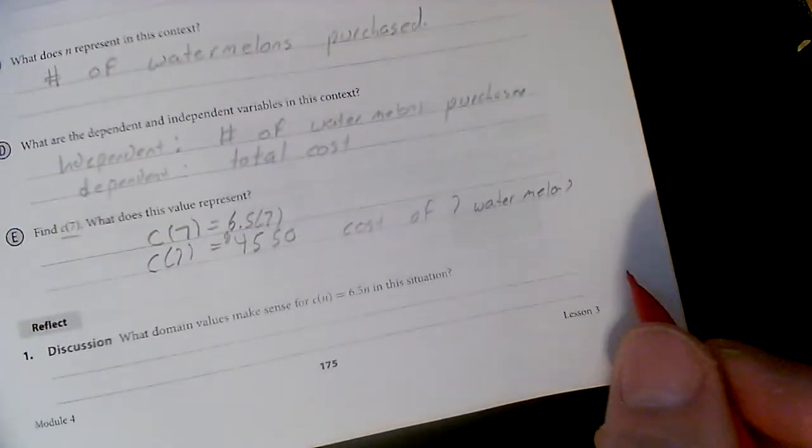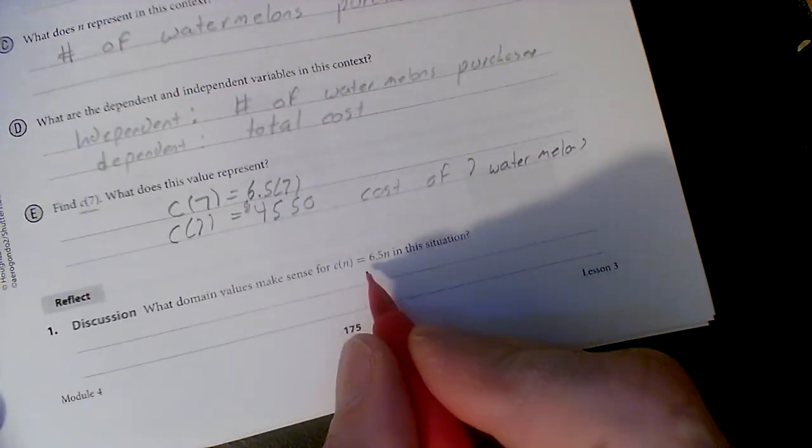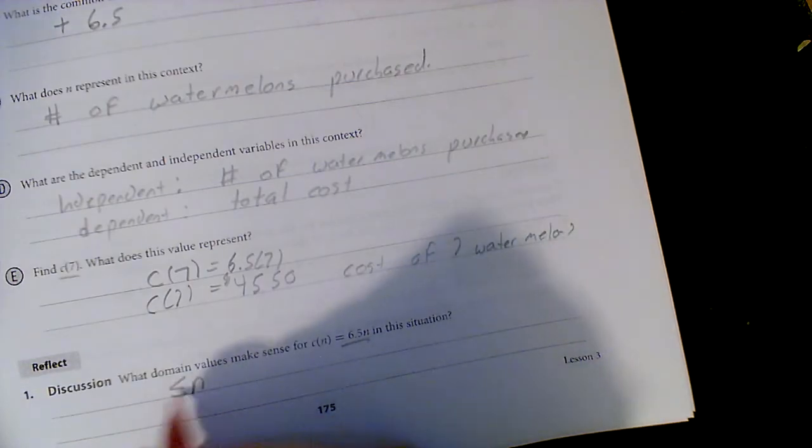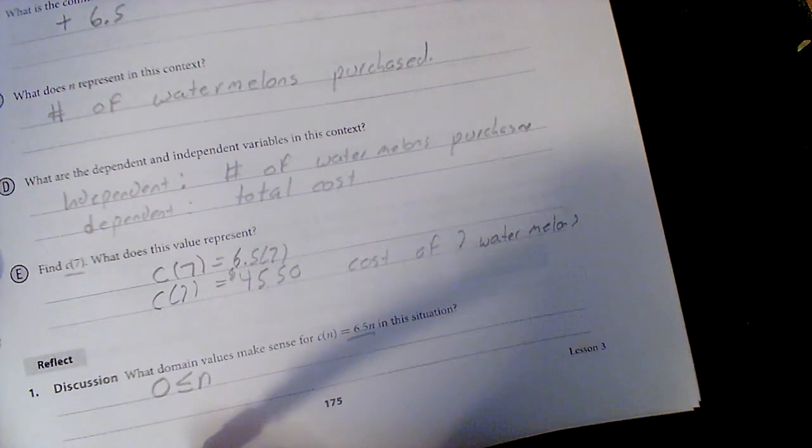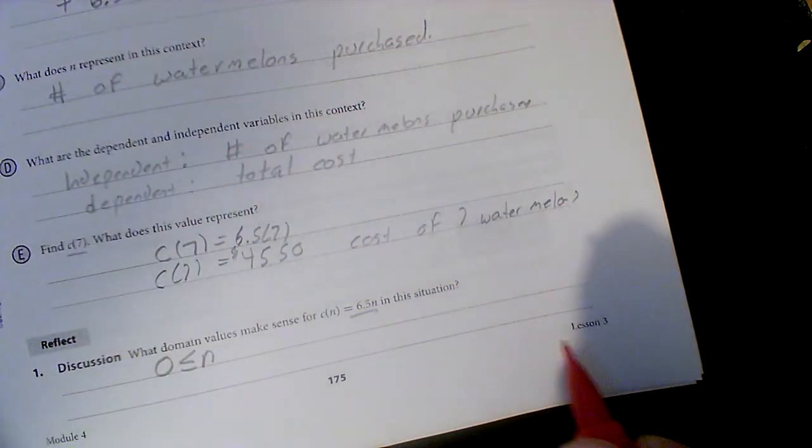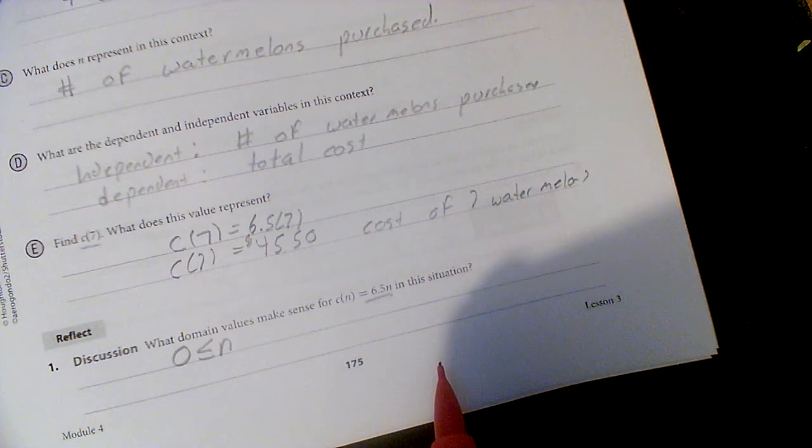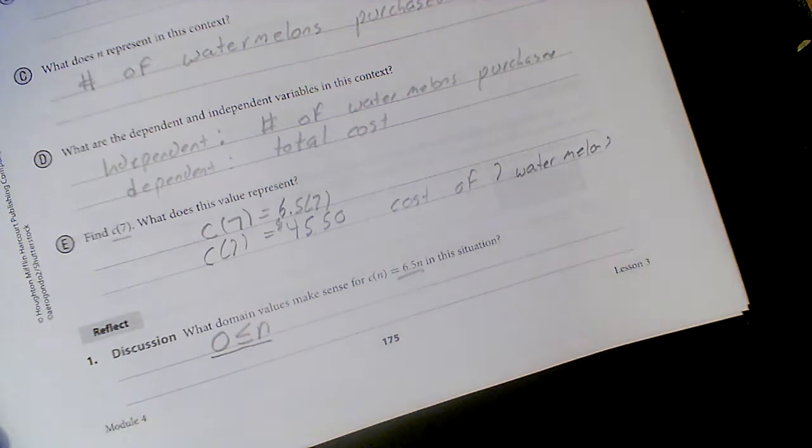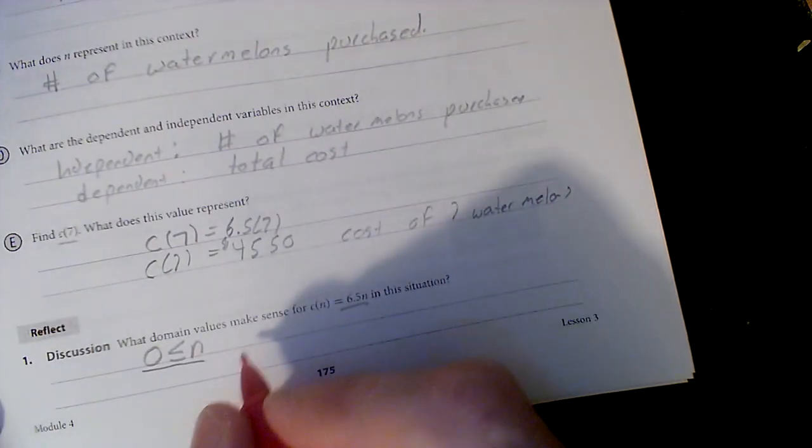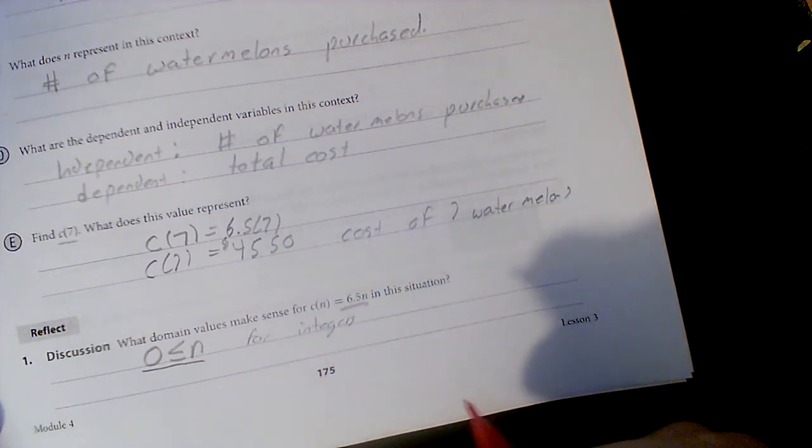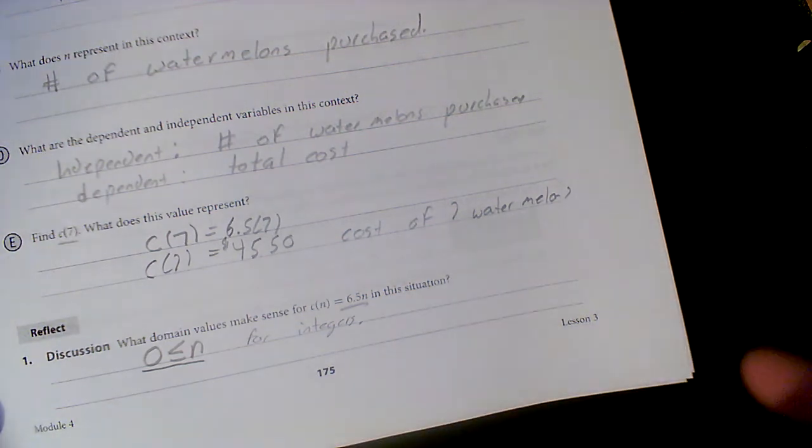Domain. What domain makes sense? Well, in this situation, it's definitely the number is greater than or equal to zero. I guess you could buy zero watermelons. And if you wanted to put an upper end on it, you could. How many families are gonna buy seven watermelons? You could probably say less than seven. Or if you're a store, I'm not gonna buy more than a hundred watermelons. But for right now, we'll just leave it with a low end. We cannot go into that negative watermelons. And I would say for integers, because we're not gonna buy half a watermelon.